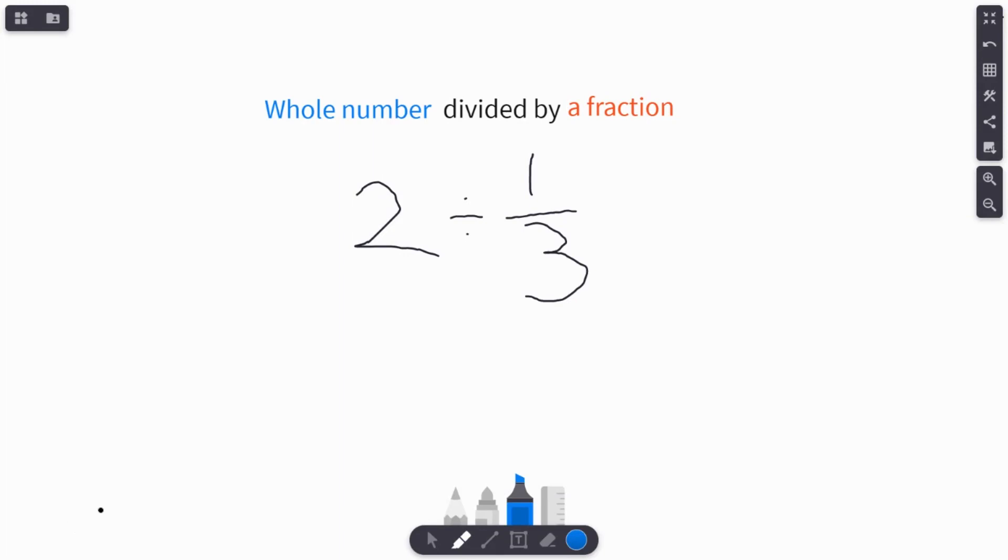If you look right here, I have the problem 2 divided by one-third, so our whole number is 2. I made it blue to match the words. And then our fraction in this problem is the one-third, and I'll make that red to match the words. So again, we're going to learn how to take a whole number and divide it by a fraction.